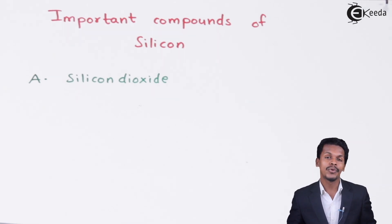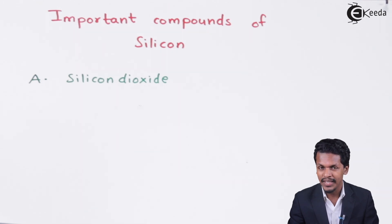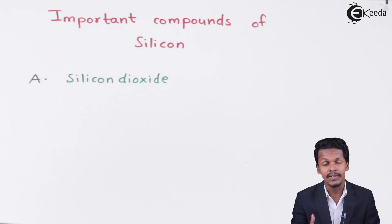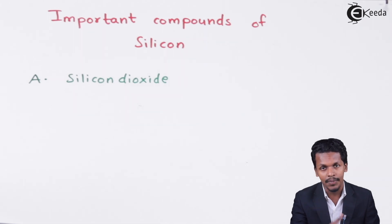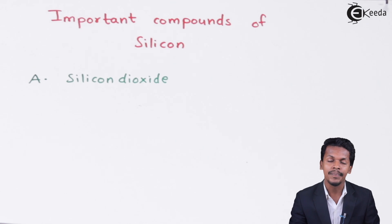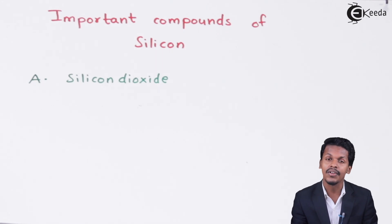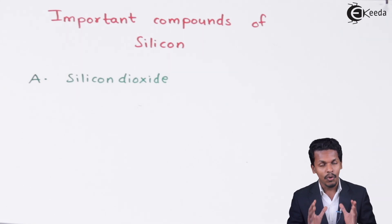Silicon dioxide is formed whenever silicon combines with two oxygen atoms. But this is not a compound where silicon forms a double bond with oxygen, like carbon which forms a double bond with oxygen in carbon dioxide. The reason is that carbon can show a catenation process, and that is how it can form a double bond with electronegative compounds like oxygen or nitrogen. But in the case of silicon, silicon doesn't form a double bond with another silicon or with another oxygen or electronegative element. So it will form a single bond only, and the bond will be a covalent bond.